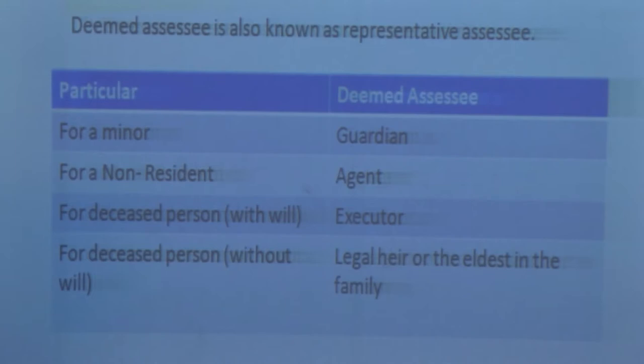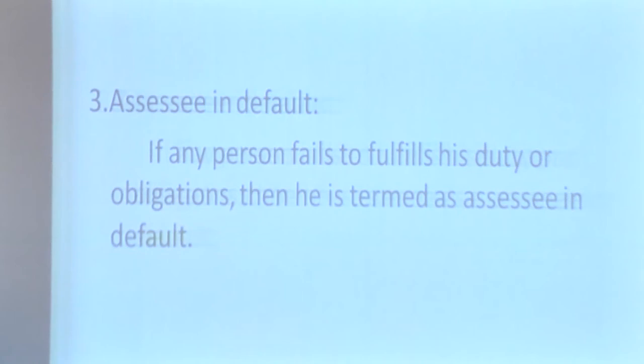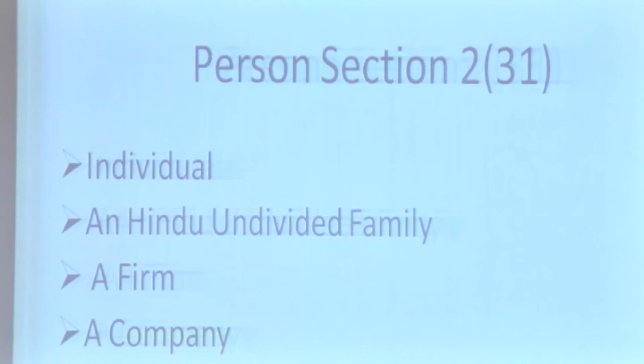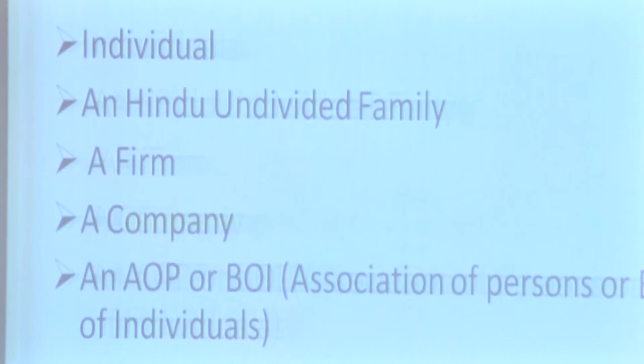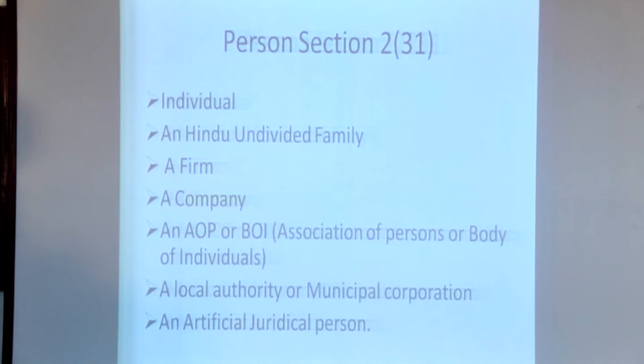For a deceased person without a will, the legal heir or elder of the family is the deemed assessee. The third type is assessee in default: any person who fails to fulfill his duty or obligation is termed an assessee in default. Under Section 2 sub-section 31, a person includes: an individual, a Hindu Undivided Family, a firm, a company, an association of persons, a body of individuals, a local authority or municipal corporation, and an artificial juridical person.